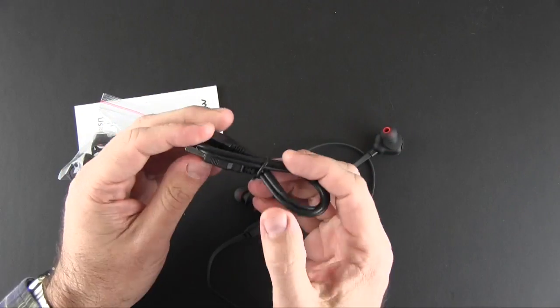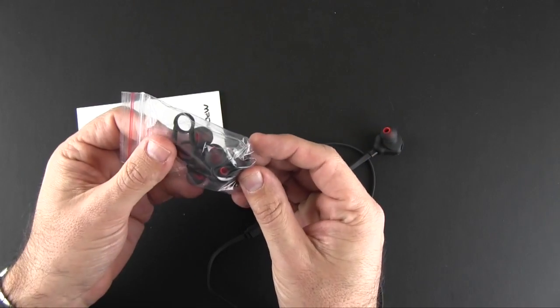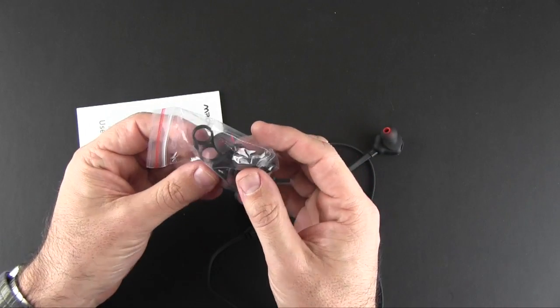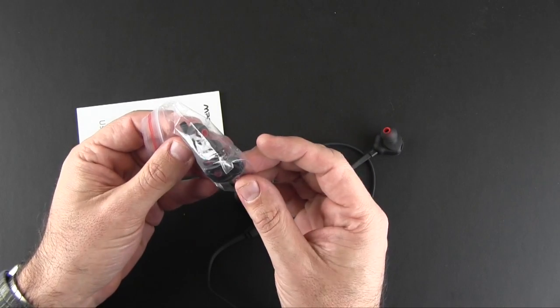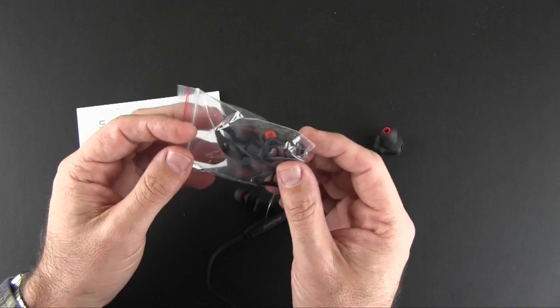So inside here, you're going to have a micro USB charger. You're going to have a couple different size ear tips, as well as ear hooks for securing these in the anti-helix portion of your ear.